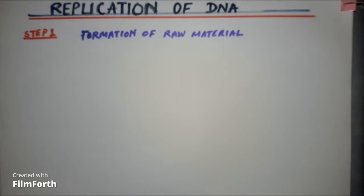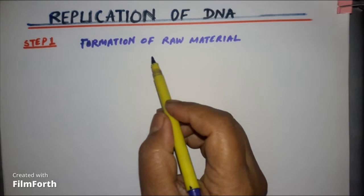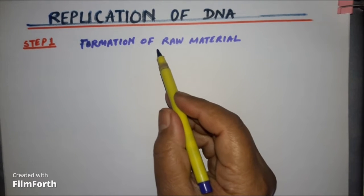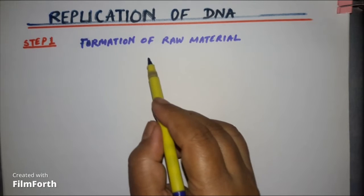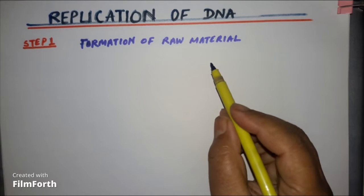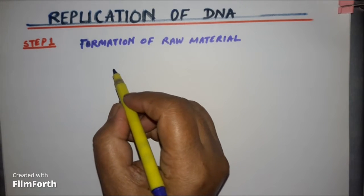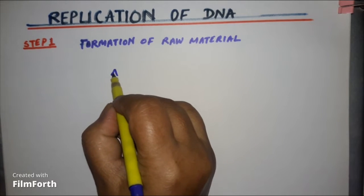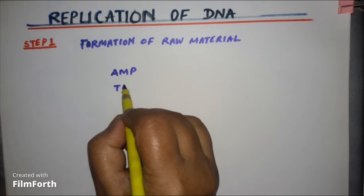Let's study replication of DNA. The replication takes place at the S stage of the cell cycle. First step is formation of raw material. What is the raw material for synthesis of DNA? Nucleotides. You know adenosine monophosphate, thymidine monophosphate.